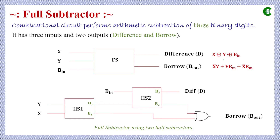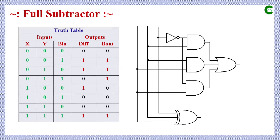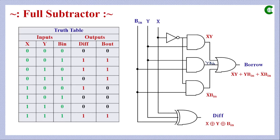For difference, it is the XOR operation between the three inputs: X XOR Y XOR BIN. For borrow output, we have OR, AND, and NOT operations: X̅Y OR X̅·BIN OR BIN·Y. The resulting logic circuit uses AND gates, three-input OR gates, and NOT gates, forming the standard full subtractor circuit.